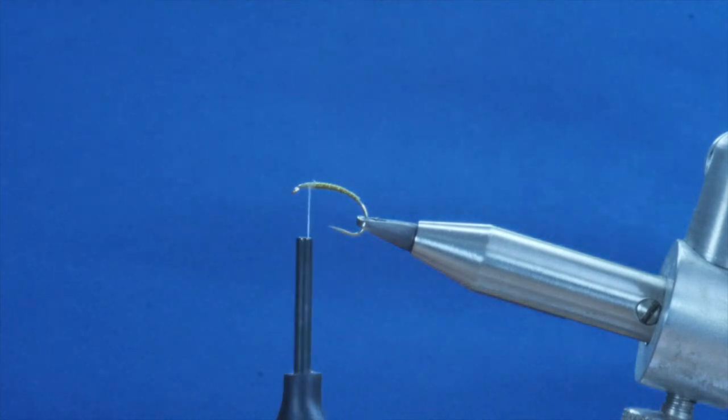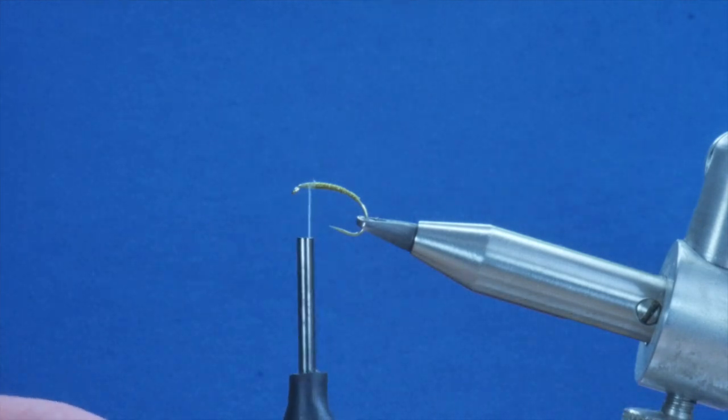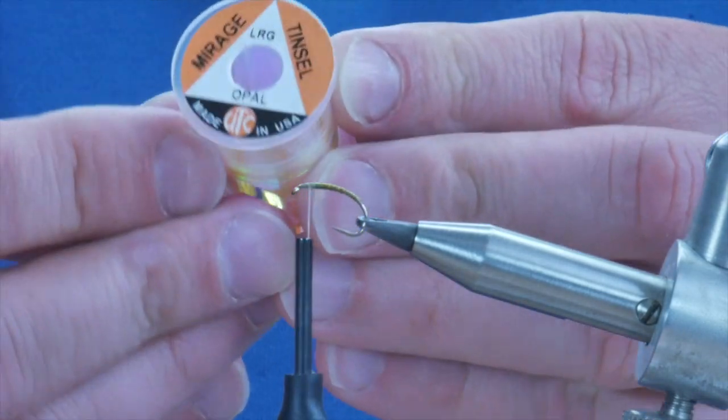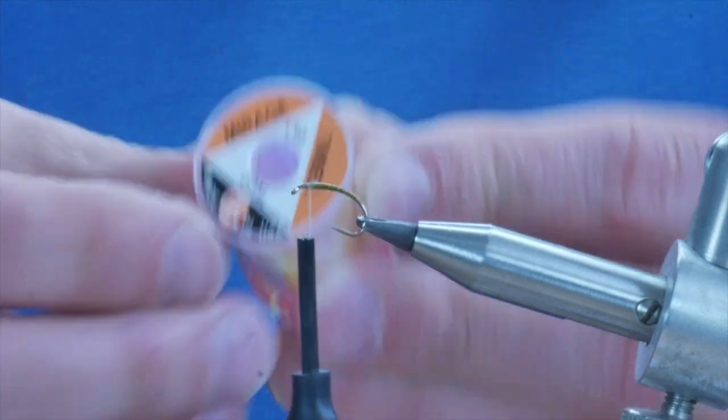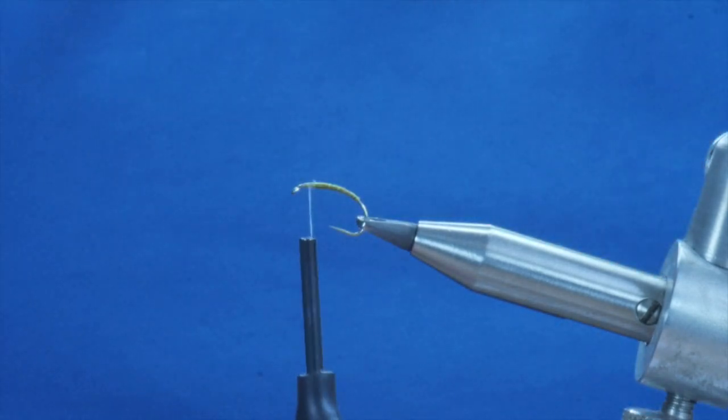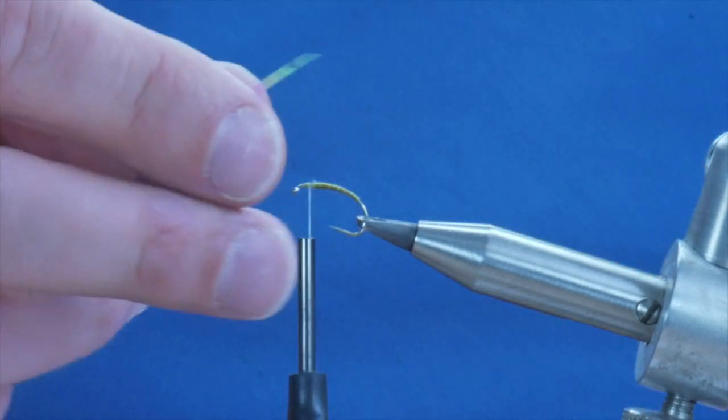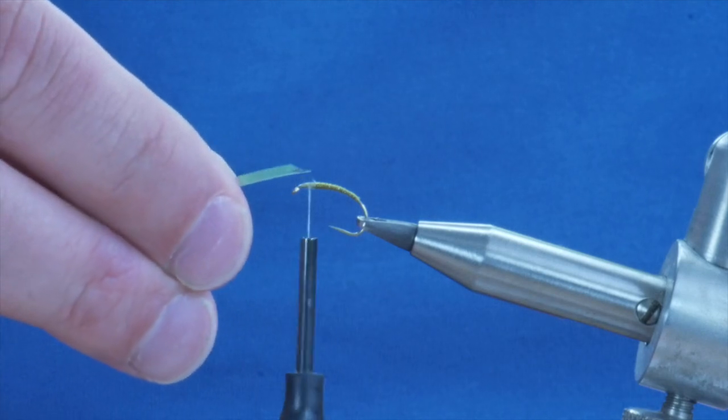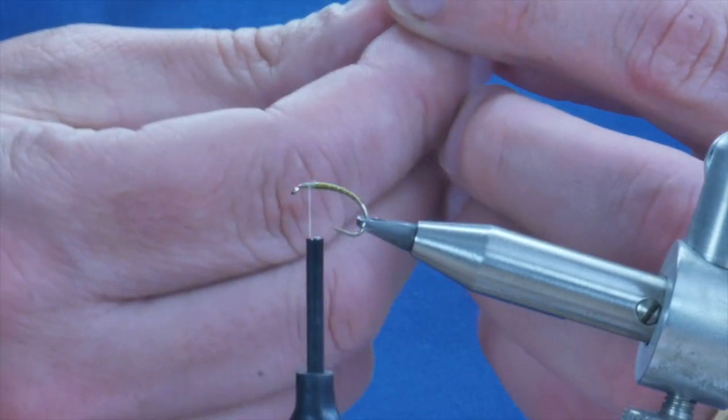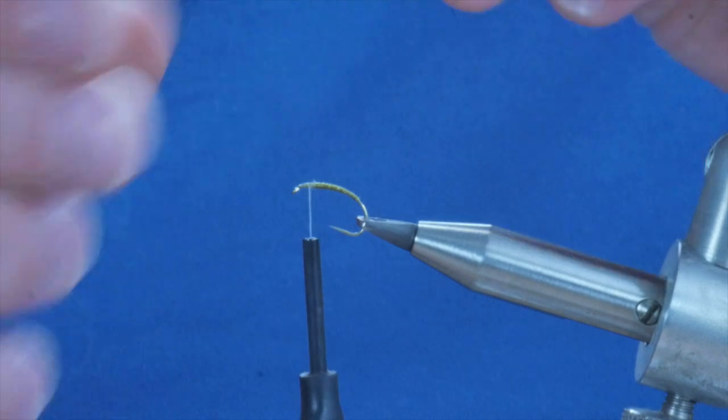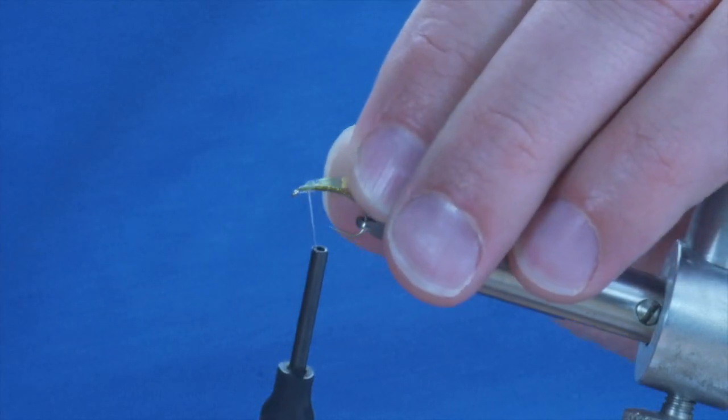So I'm going to add a bit of bling to this fly. And the way I'm going to do it is with a bit of mirage tinsel. This is the opal flavor and it's enlarged. I've already taken a little bit off. And I've cut it diagonally so I can have a tag to attach it to the body.